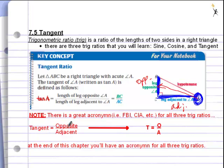Right below this, you'll see that tangent equals opposite over adjacent. By the end of this chapter, you're going to have three different acronyms, like FBI and CIA.